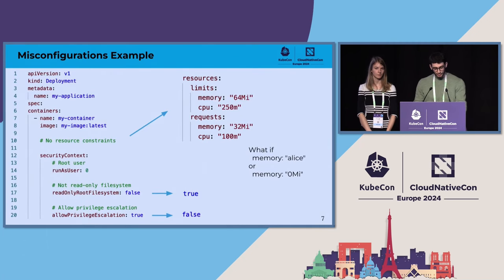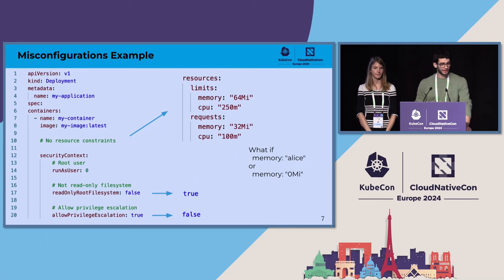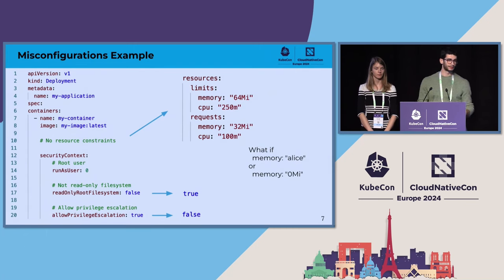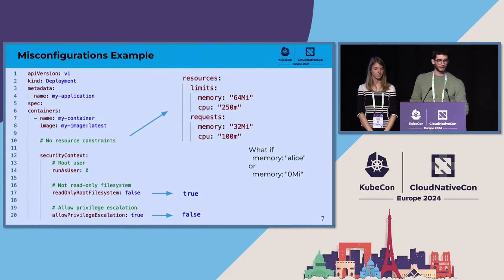Looking at an example: on the left of the slides you can see a snippet of a YAML file used to deploy a deployment resource on a cluster. There are some misconfigurations that tools are able to detect — for example, there are no resource constraints for this deployment, which is also running as root. It's not using a read-only file system and it can allow privilege escalation. Some of these are easy to fix — it's a matter of flipping from false to true. Others require you to write a new piece of configuration.